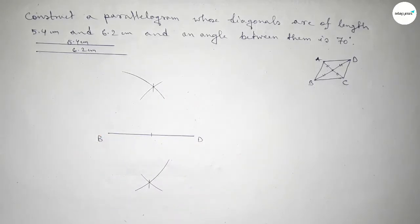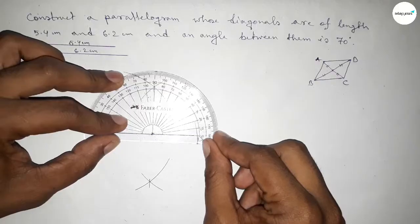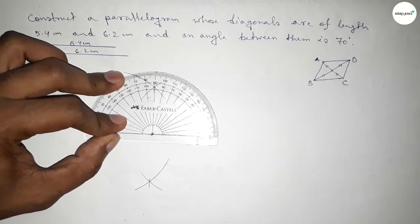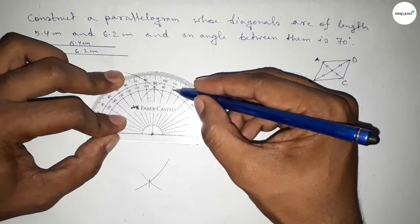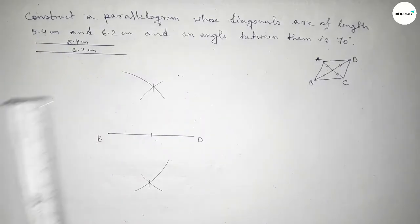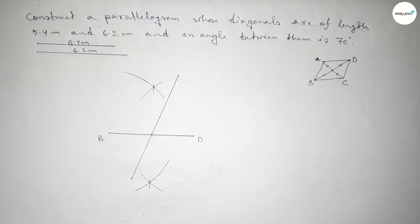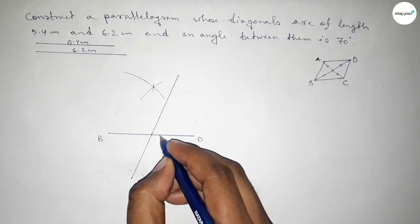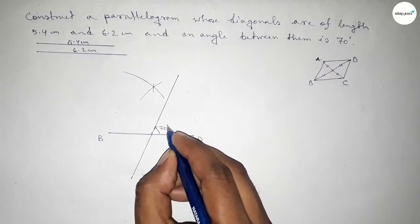Next, we have to draw a 70 degree angle at the midpoint. Putting the protractor on the point and measuring a 70 degree angle. So this is 70 degrees. Now joining this line through the midpoint at 70 degrees — we've got a 70 degree angle here.